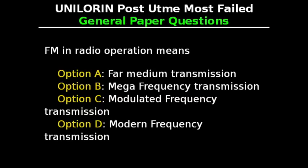General Paper Questions. This question says: FM in radio operation means — Option A: Far Medium Transmission, Option B: Mega Frequency Transmission, Option C: Modulated Frequency Transmission, Option D: Modern Frequency Transmission. The correct answer is Option C, Modulated Frequency Transmission.